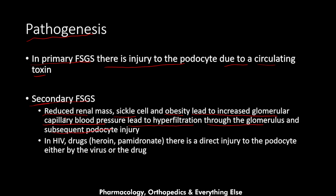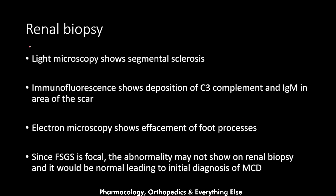With sickle cell disease, there is thrombosis and blocked vessels; with obesity, mass compresses body organs — both increase glomerular capillary blood pressure leading to hyperfiltration and podocyte injury. When secondary FSGS is due to HIV or drugs like heroin or pamidronate, there is direct injury to the podocyte by the virus or drug, leading to sclerosis and FSGS.